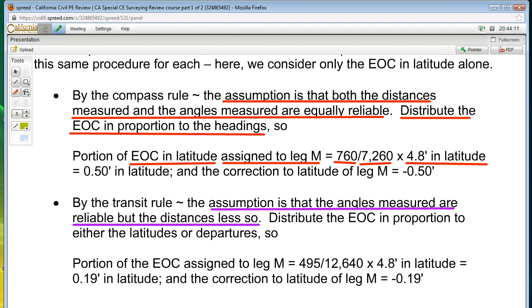So here our number comes up with 0.5 feet in latitude. That means that the portion of the error of closure in latitude, that is the 4.8 feet, what portion of that is assigned to leg M? It's half a foot. The correction is going to be that same value, but in the opposite direction, it's a negative. So the correction to the latitude of leg M is still half a foot, but it's the opposite algebraic sign.